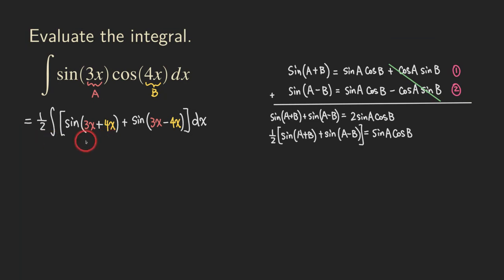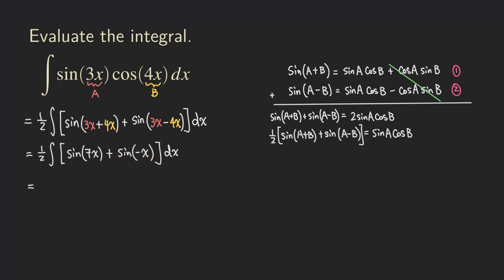Let's simplify those two terms. We have one half times the integral of sine of 7x, and then the other term is plus sine of negative x. Because the sine function is an odd function, we can simplify this to: one half times the integral of sine of 7x minus sine of x. This way we don't have to worry too much about the chain rule when integrating sine of x.